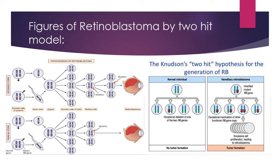In the normal individual and hereditary retinoblastoma cases, occasional deletion of one of the two RB genes can happen but cannot alone form tumors. However, an inherited mutant RB gene can mutate the other allele, or inactivation of the other functional RB gene copy can occur. This creates a chance of having an affected retinoblastoma or tumor-forming child, as excessive cell proliferation leads to retinoblastoma.